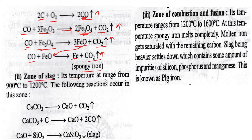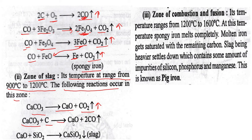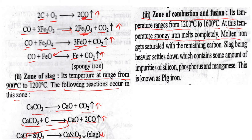Zone of slag (900–1200°C): CaCO3 → CaO + CO2; CaCO3 + C → CaO + 2CO; CaO + SiO2 → CaSiO3 (slag). Zone of combustion and fusion (1200–1600°C): spongy iron melts completely, molten iron becomes saturated with carbon, and slag settles. This product containing impurities of silicon, phosphorus, and magnesium is known as pig iron.